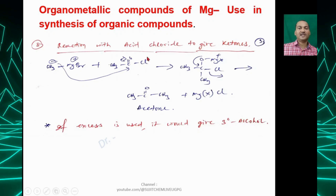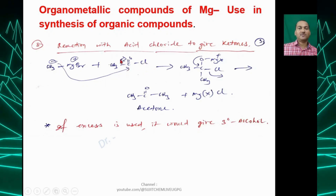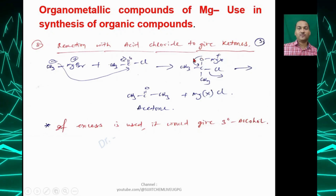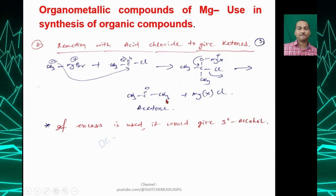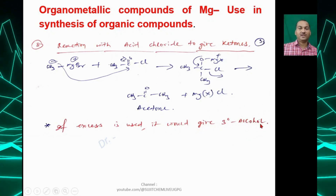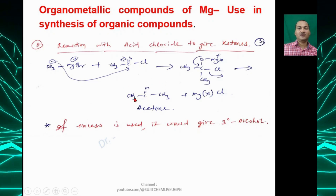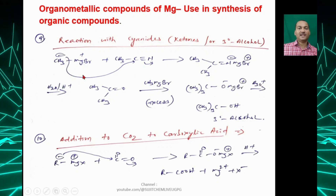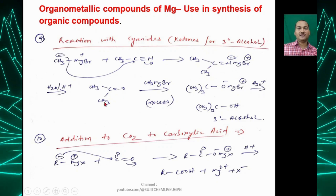With acid chloride, CH₃⁻ attacks the carbonyl carbon; the double bond breaks on oxygen giving O⁻MgX⁺, and then O⁻ kicks out Cl⁻ to form acetone. If excess Grignard reagent is used, acetone reacts with another equivalent to give a tertiary alcohol. With a cyanide, the intermediate upon hydrolysis gives a ketone, which reacts with another Grignard equivalent to give a tertiary alcohol.